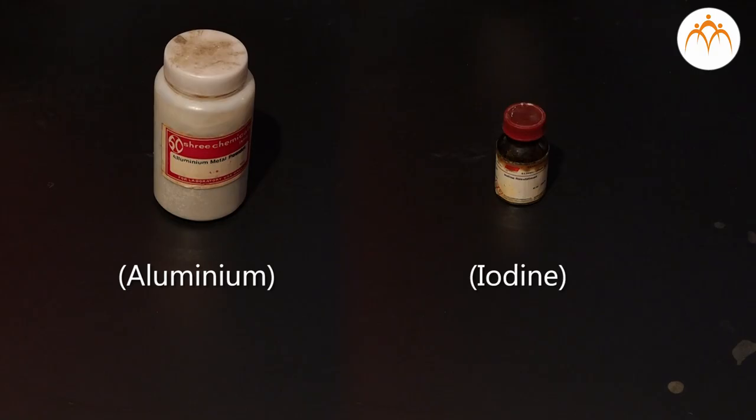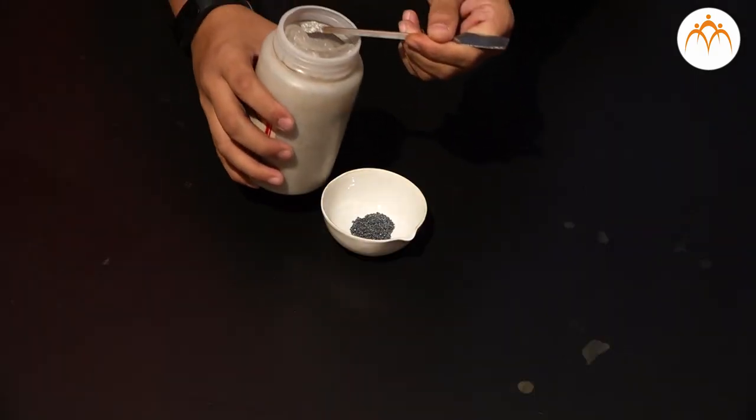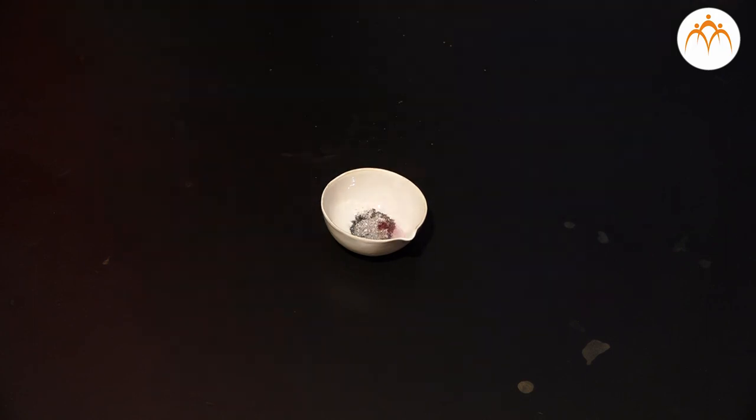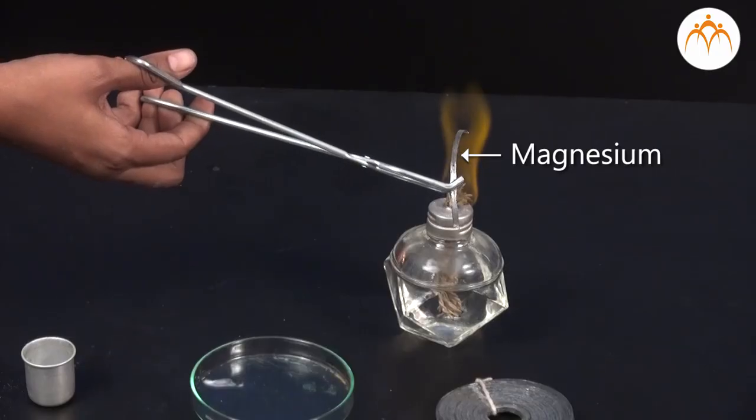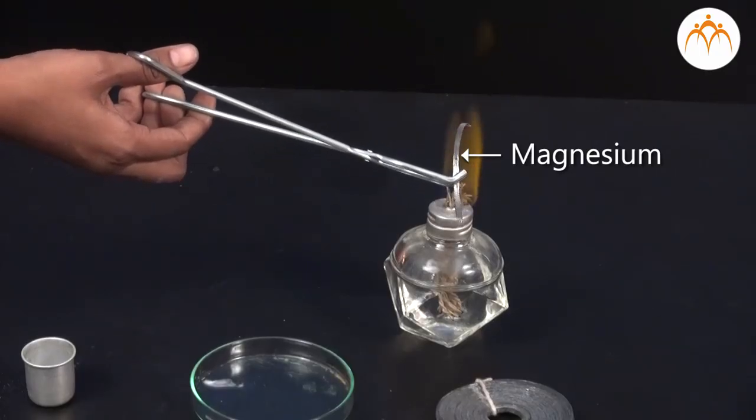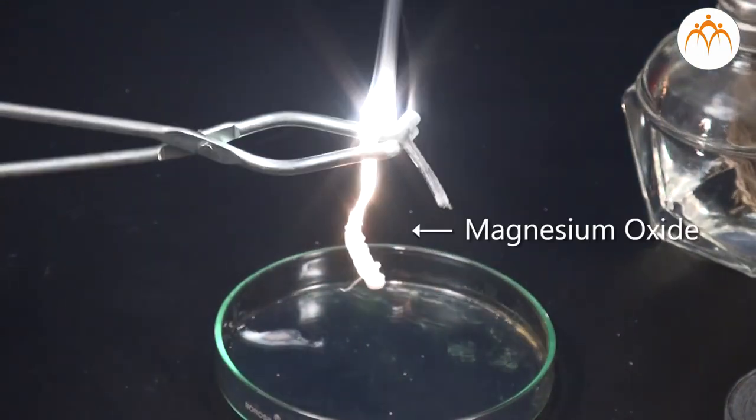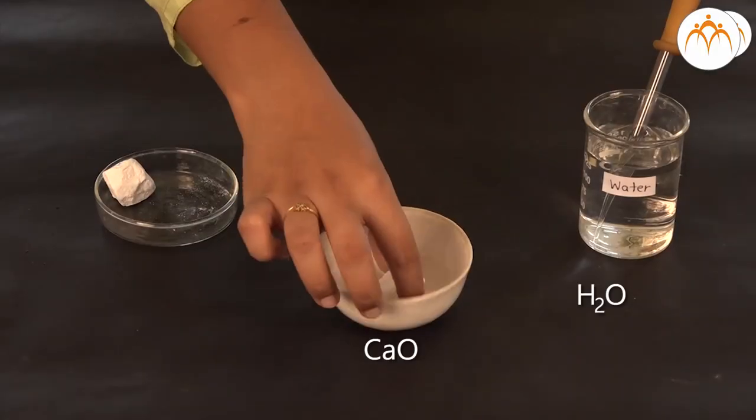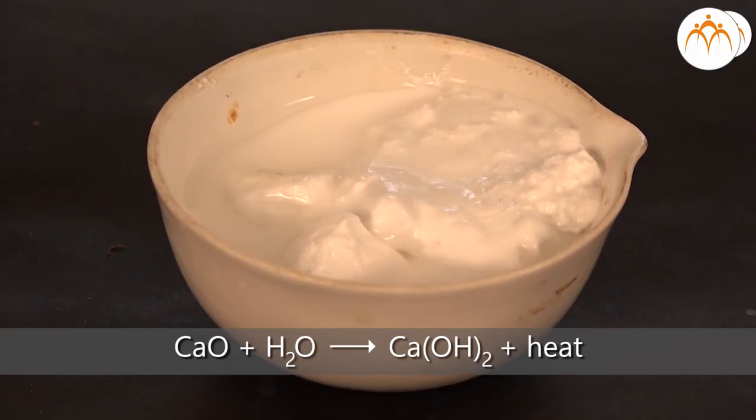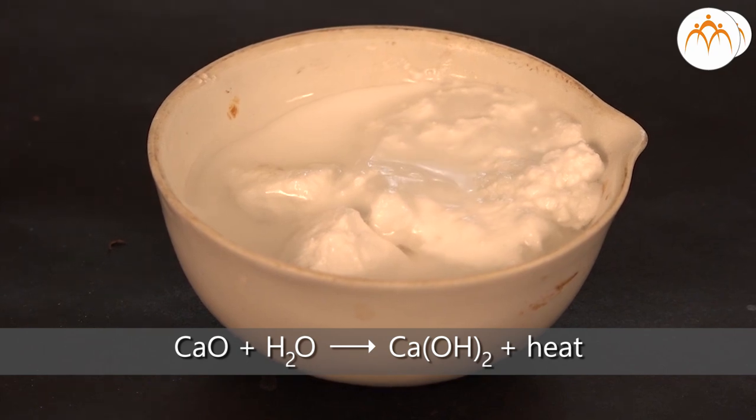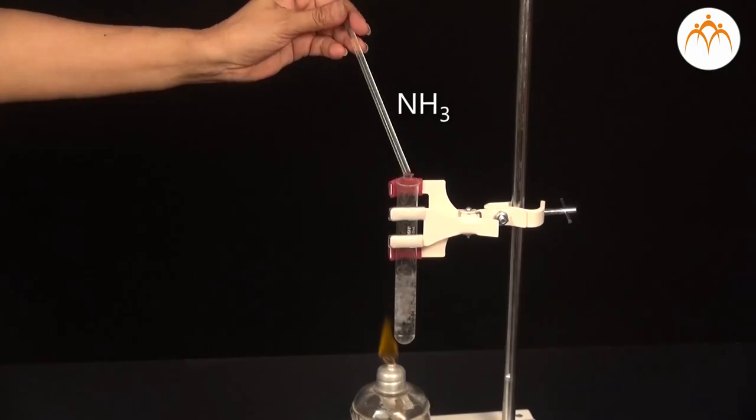Two reactants combine in a reaction to form a single product. Usually exothermic because bond formation releases energy. For example, 2Mg plus O2 gives 2MgO. CaO plus H2O gives Ca(OH)2 plus heat. NH3 plus HCl gives NH4Cl.